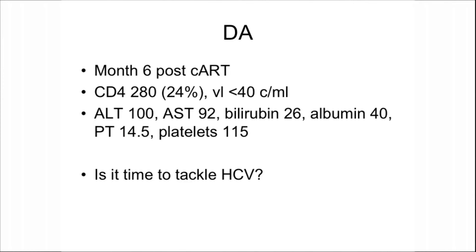Six months post-antiretroviral therapy, his CD4 count is now 280 at 24%, so even by Romanian national guidelines he would be ready for anti-hepatitis C treatment. His liver has stabilised and we now ask: is it time to tackle the hepatitis C? What are the issues when treating patients with advanced fibrosis using pegylated interferon and ribavirin?